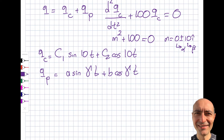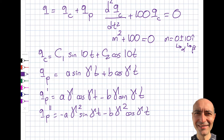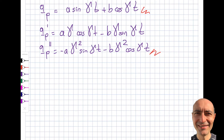I need to take derivatives of Q_p. Q_p' = Aγ cos(γt) − Bγ sin(γt). The second derivative is Q_p'' = −Aγ² sin(γt) − Bγ² cos(γt). I have the second derivative and the function itself; I don't need the first derivative here since there's no dQ/dt term in the equation.